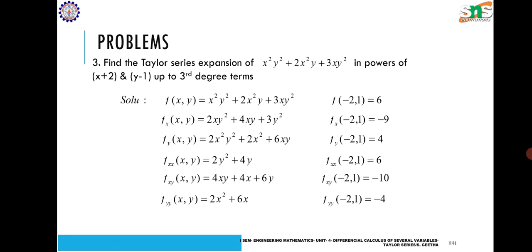Finding the first derivative f_x: differentiating x²y² gives 2xy², differentiating 2x²y gives 4xy, and differentiating 3xy gives 3y². So f_x = 2xy² + 4xy + 3y². For f_y: differentiating y² gives 2y, so f_y = 2x²y + 2x² + 6xy. Then finding f_xx, f_xy, and f_yy, and substituting x = −2 and y = 1, we get the corresponding f values: f(−2,1) = 6, f_x(−2,1) = −9, f_y(−2,1) = 4, f_xx(−2,1) = 6, f_xy(−2,1) = −10, f_yy(−2,1) = −4.